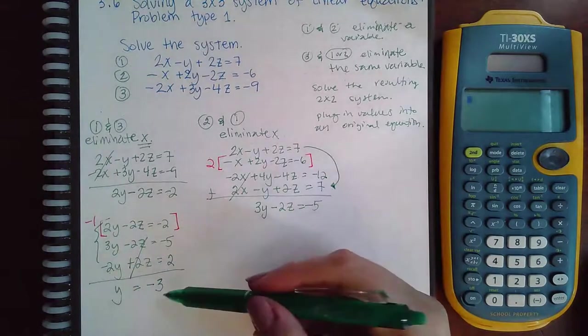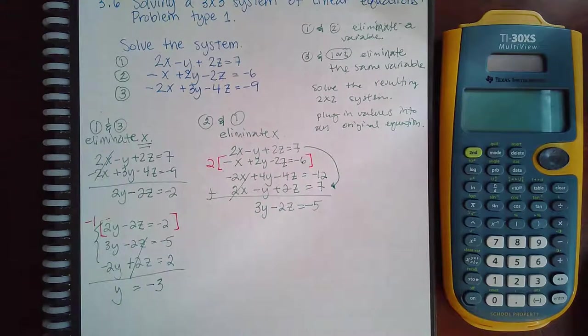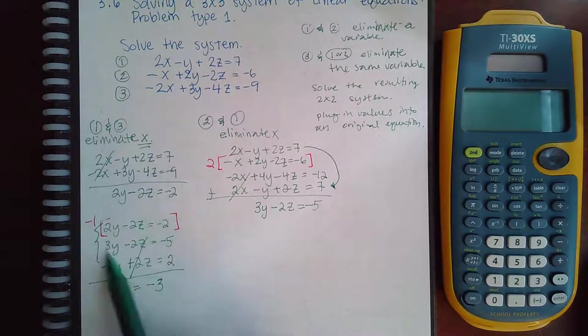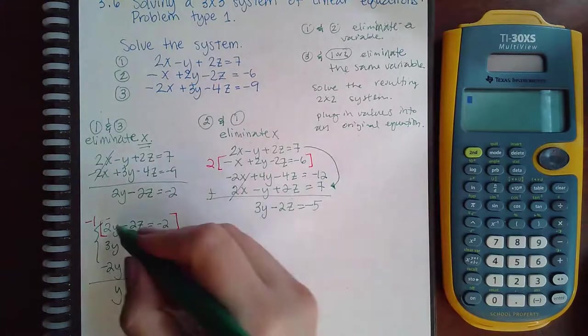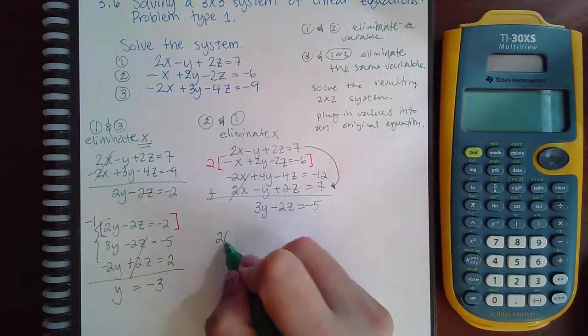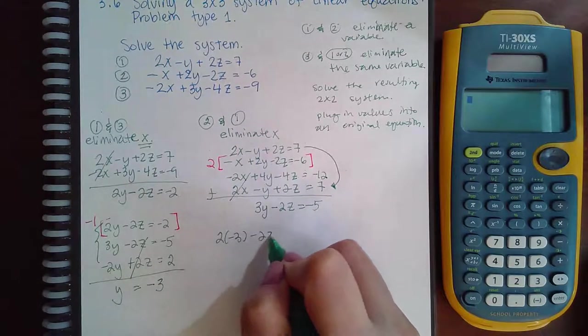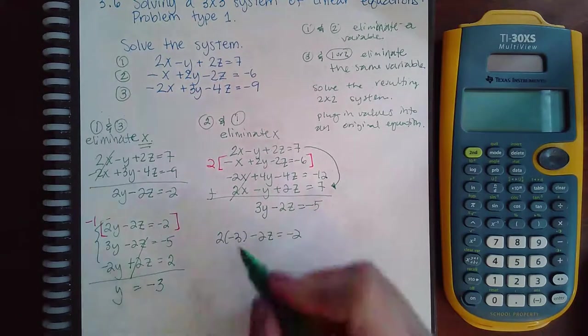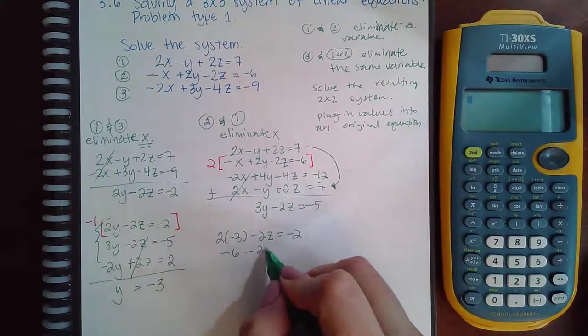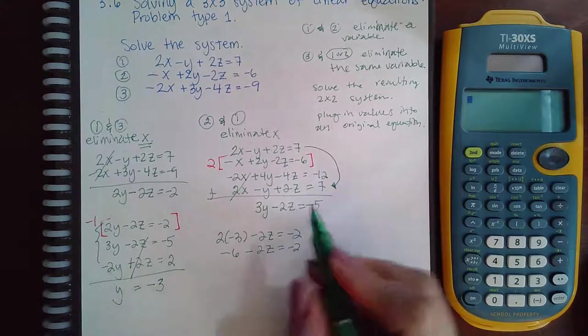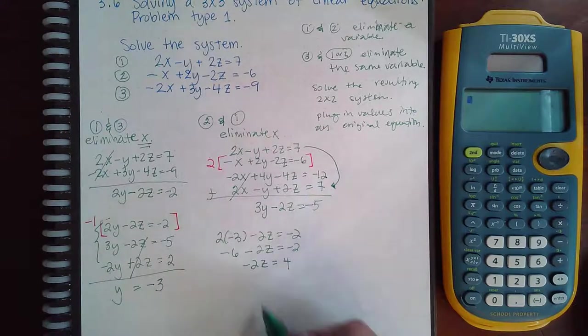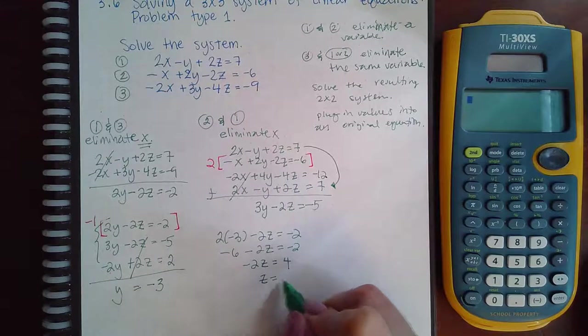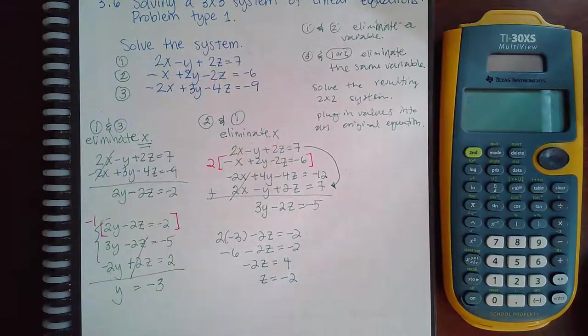I have to go back to my system to figure out what the x value, or I'm sorry, not x, there's no x's here, what the z value is. So I'm going to go ahead and pick the one that is inside the red bars, and I'm going to plug in my y value, and I'm going to try to figure out what z is. So I get negative 6 minus 2z equal negative 2. If I add 6 over, I get negative 2z equals 4. And then if I divide by negative 2, I end up with z equaling negative 2.